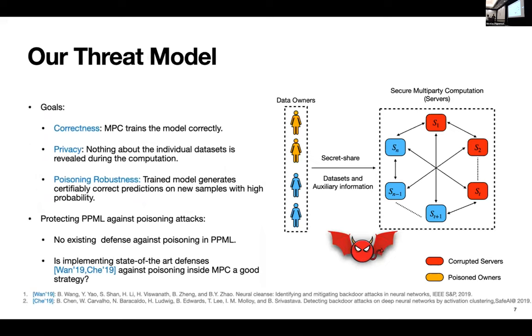So now we introduce a new poisoning aware threat model here, where the adversary can not only corrupt the servers but can also poison the data owners in this case. So how do the goals change in this new threat model? So the correctness and privacy goal remains the same from the previous threat model. However, we introduce a new goal into the picture. It's mainly where the trained model from the MPC should be able to certifiably give you correct prediction on new samples with high probability.